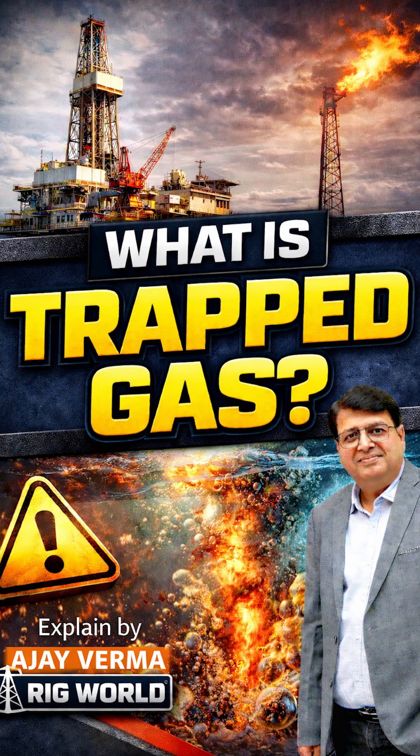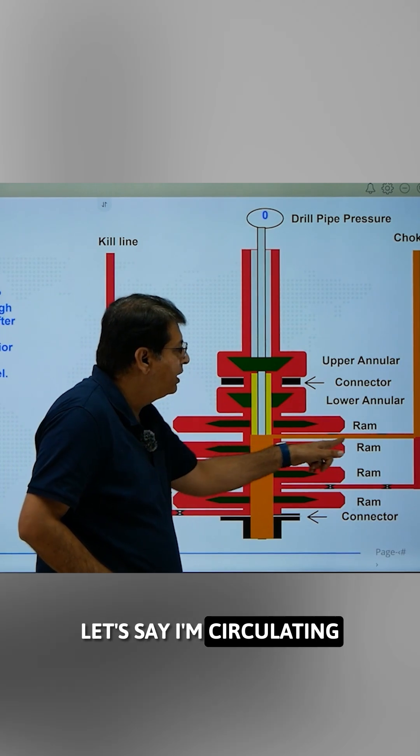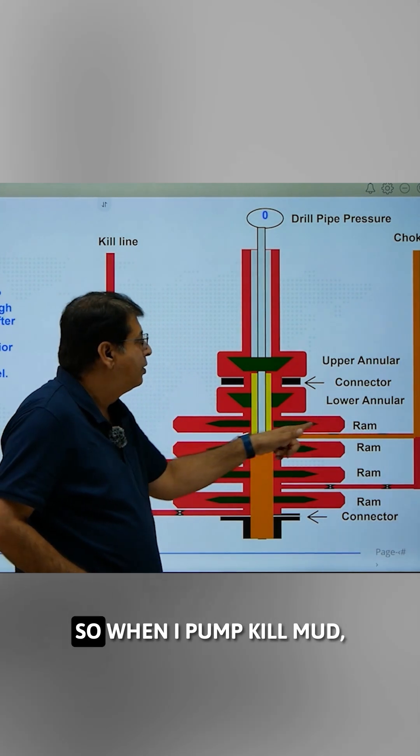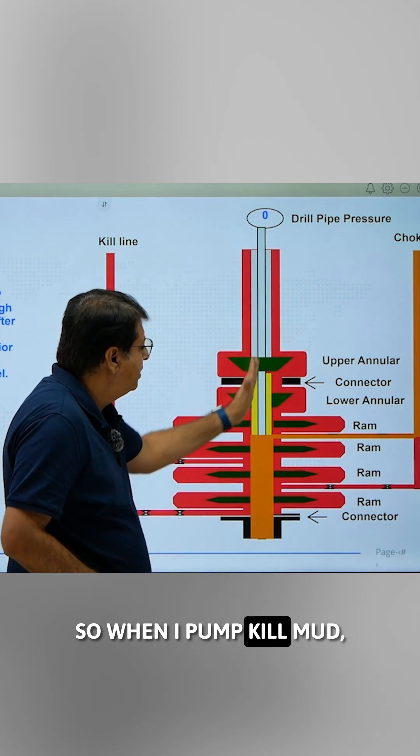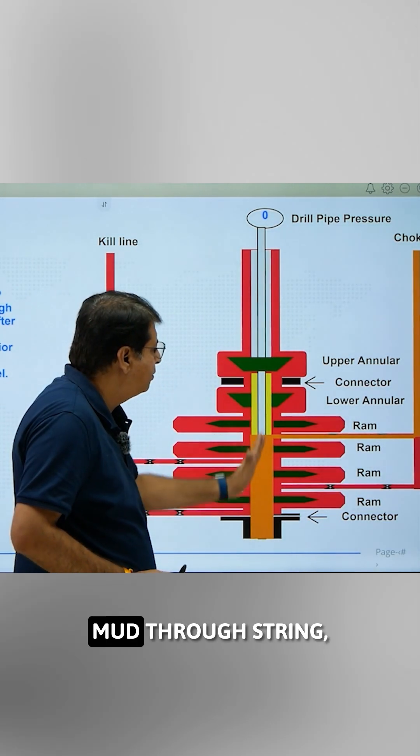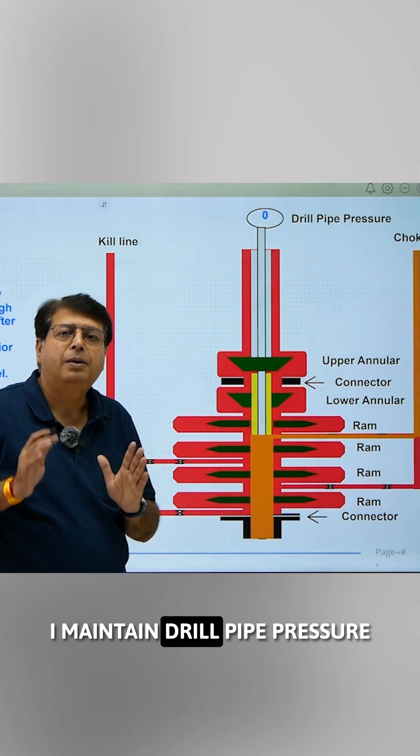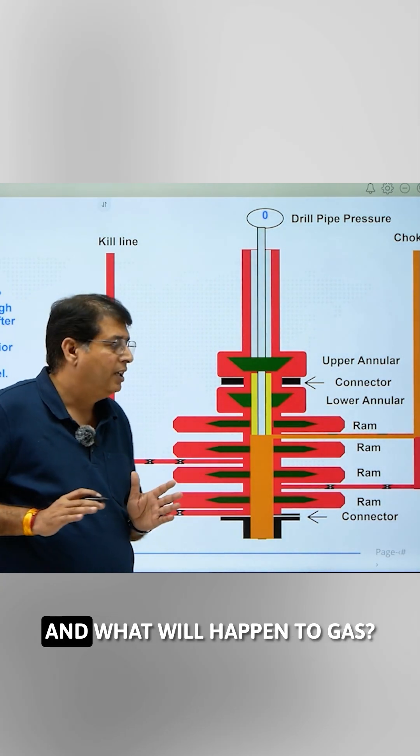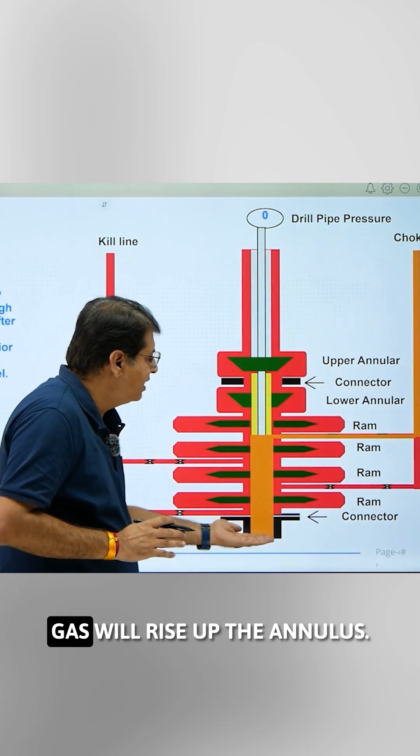How this gas is trapped, let us understand this way. Here you see, let's say I'm circulating through the upper choke line. So when I pump kill mud, let's say I'm using weight in weight method. So when I pump kill mud through string, I maintain drill pipe pressure as per step down chart.